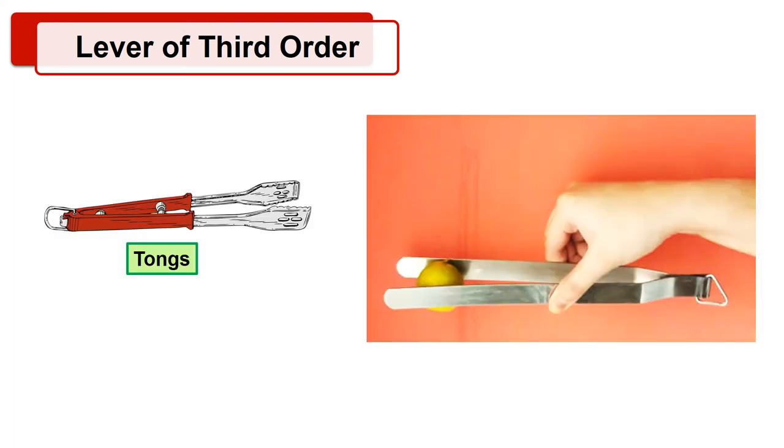Now let's see the lever of third order. Do you know how do we lift the object using tongs? When we lift the object, load is at one end of the arms of the tongs as shown in the picture, and we apply force or effort in the middle of the arms. It means the effort is applied in the middle of the lever, while the fulcrum and the load are at the opposite ends.